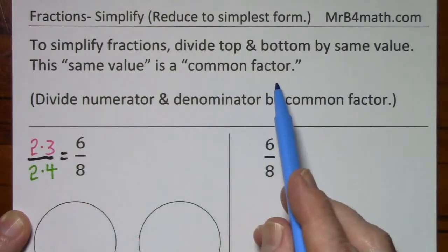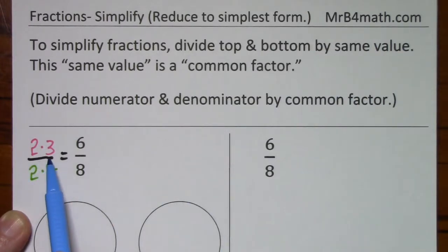Usually with factors in mathematics, we want you to think of things that multiply. 2 times 3 gives you 6, so 2 and 3 are factors of 6.